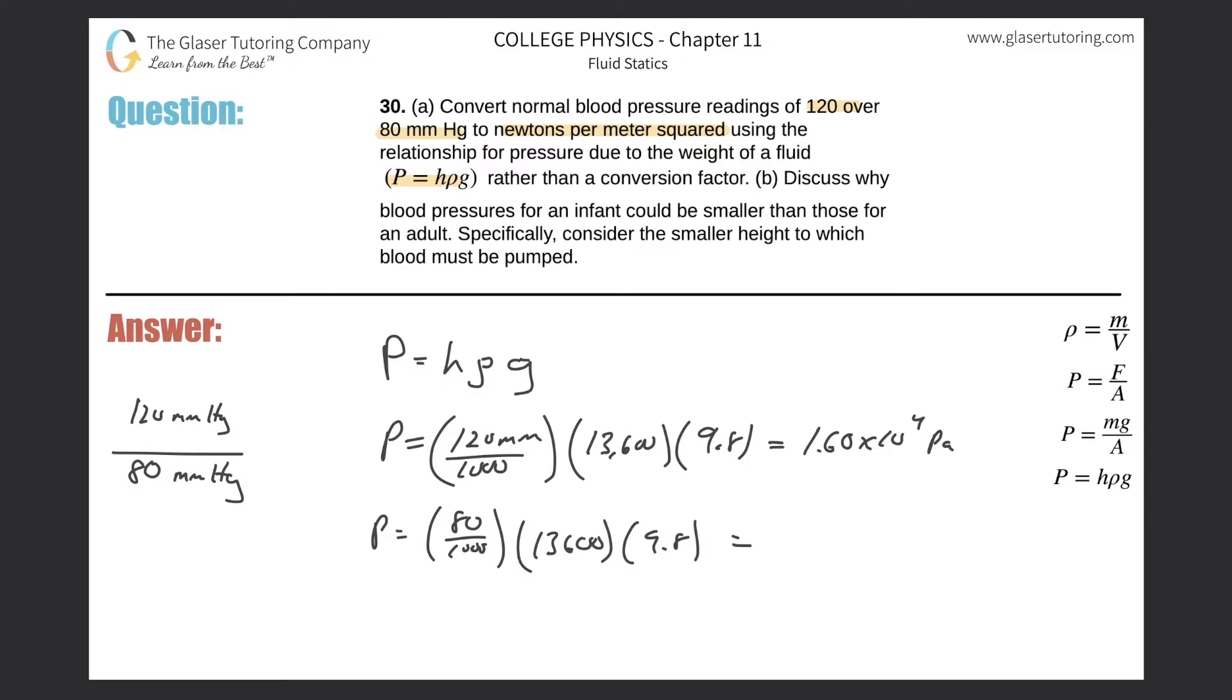And then similarly for the bottom, 80 divided by 1000 times 13,600 times 9.8. And we get a value here about 1.06 times 10 to the 4th Pascals.